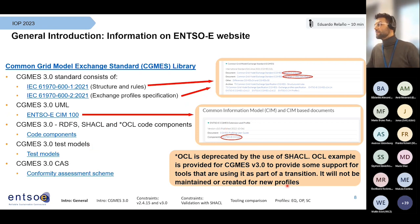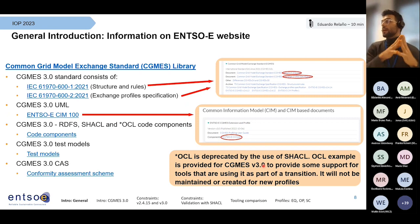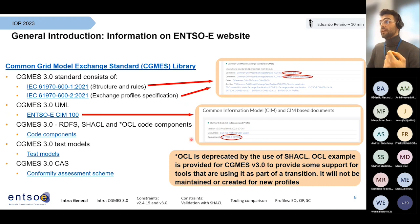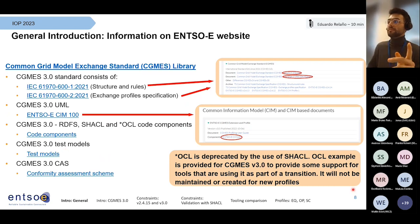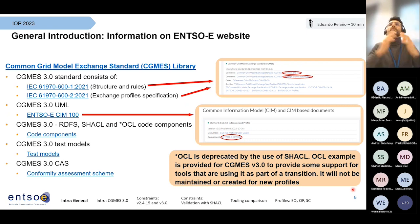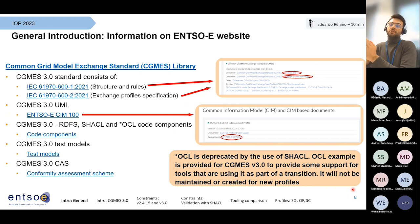Here you also have test models. We have some models showing how they can be described in CGMES 3.0, including a mini-grid, micro-grid, and a full-grid model, available via this link. You have IGMs and CGMs — or the micro-grid at least — so you can see examples of how an IGM could be described and how the merge, which is the CGM, looks like.